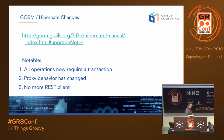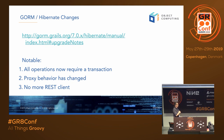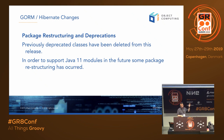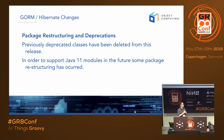GORM: Grails 4 ships with GORM 7. Even though it's a major release, it doesn't have a ton of breaking changes — just a couple. It also deprecates the REST client builder. As with Grails code, any GORM code annotated as deprecated has been removed. Some package restructuring has also been done to support Java modules.